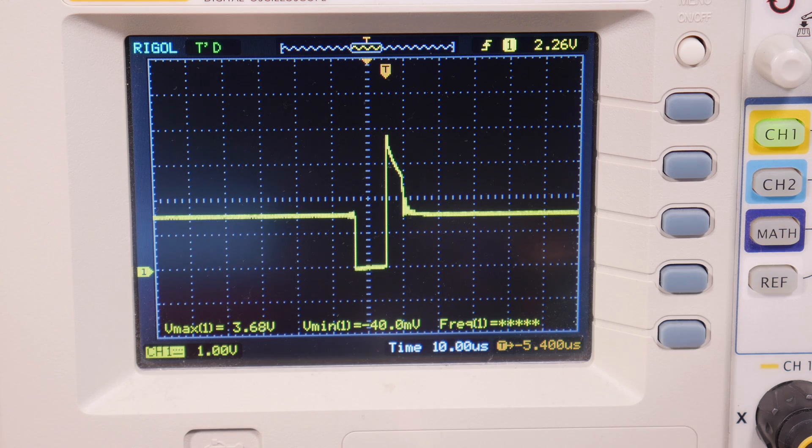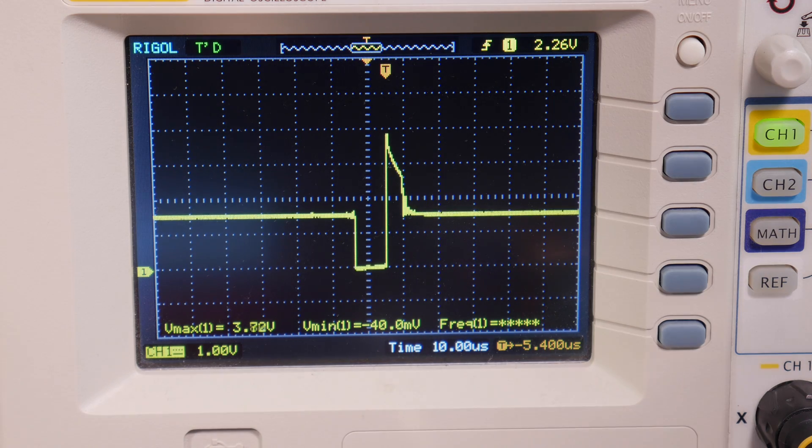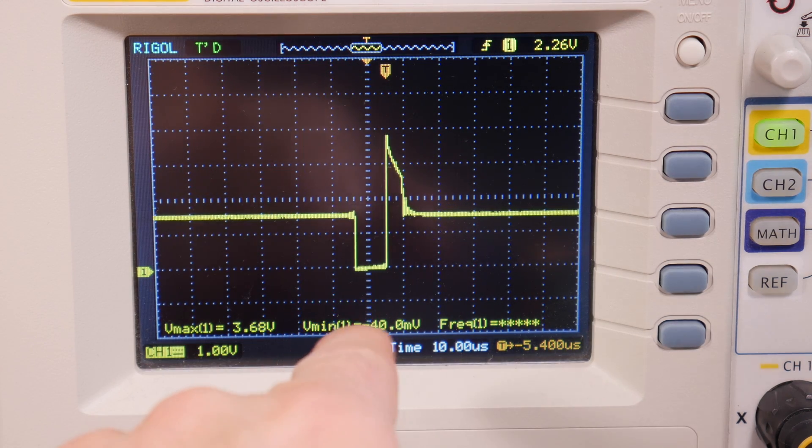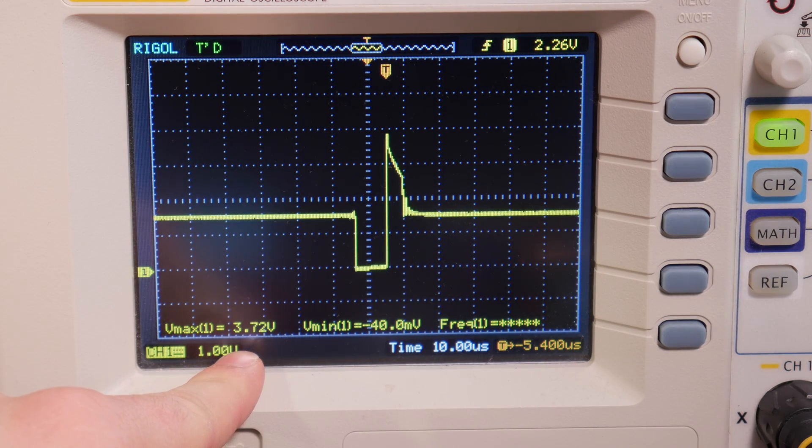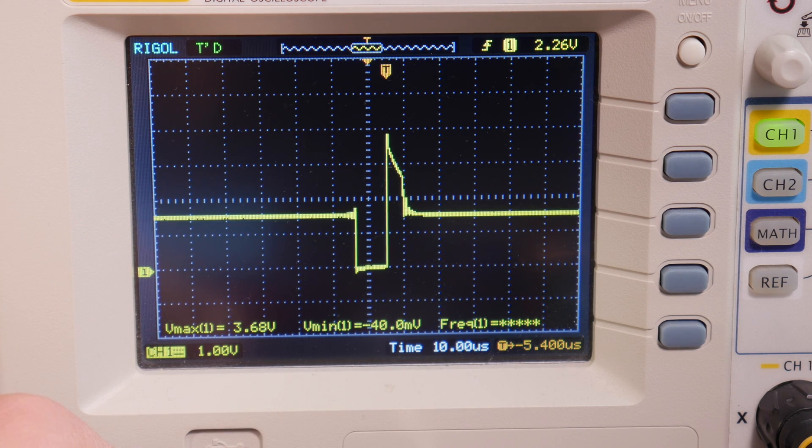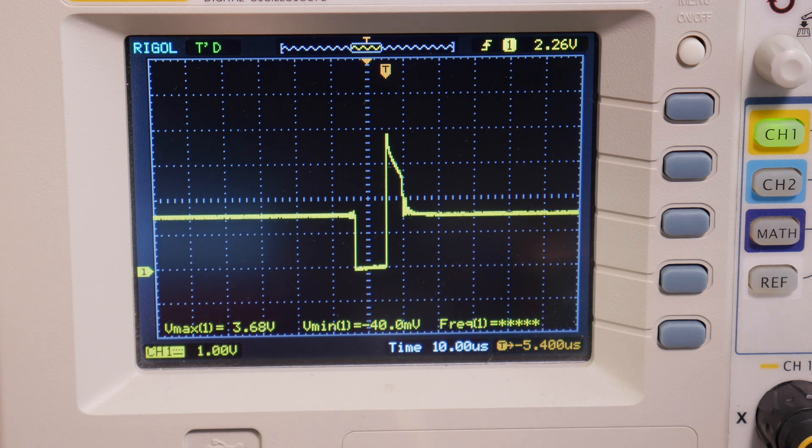One more quick measurement with the capacitor still unhooked. This is what the LED voltage looks like, and you can see it's a lot more tame. Our V max is only 3.7 or so instead of 10 and a half. So it's probably a lot easier on the LED. But the batteries are going to drain a lot quicker because we're flashing this LED 50 times a second instead of one to three times a second.